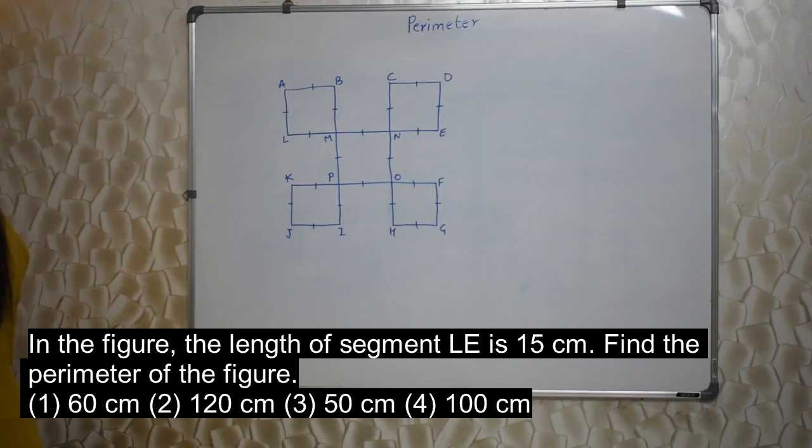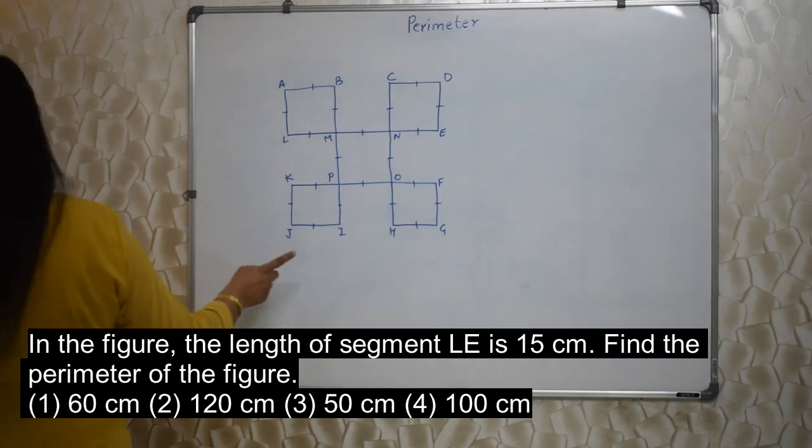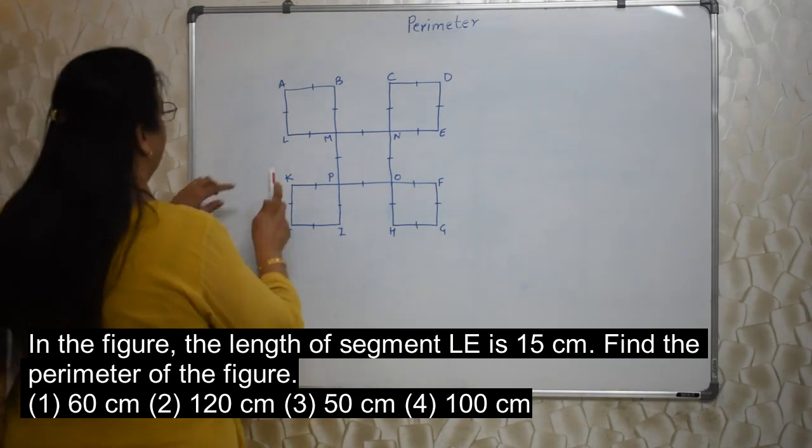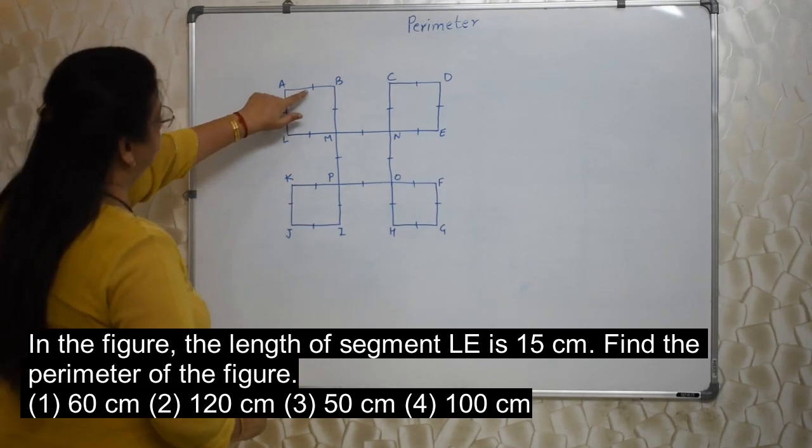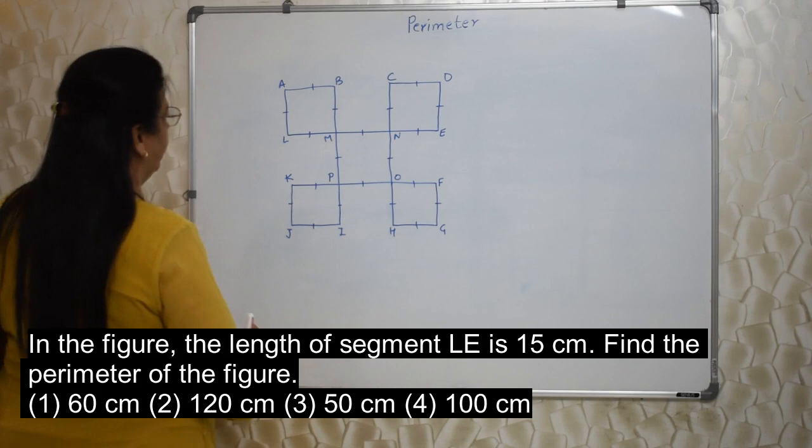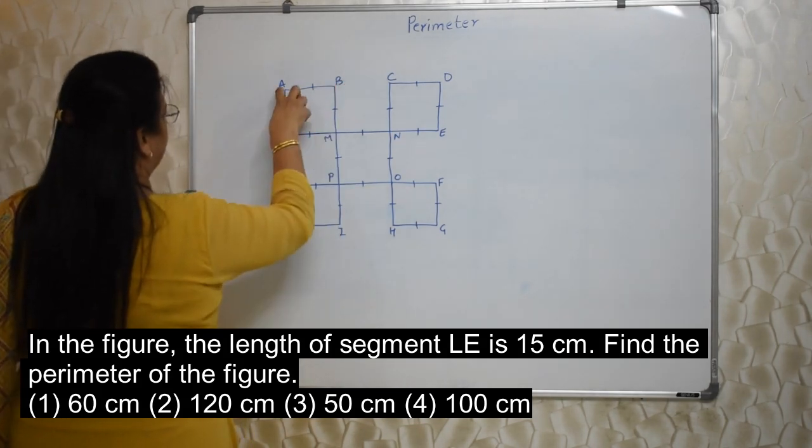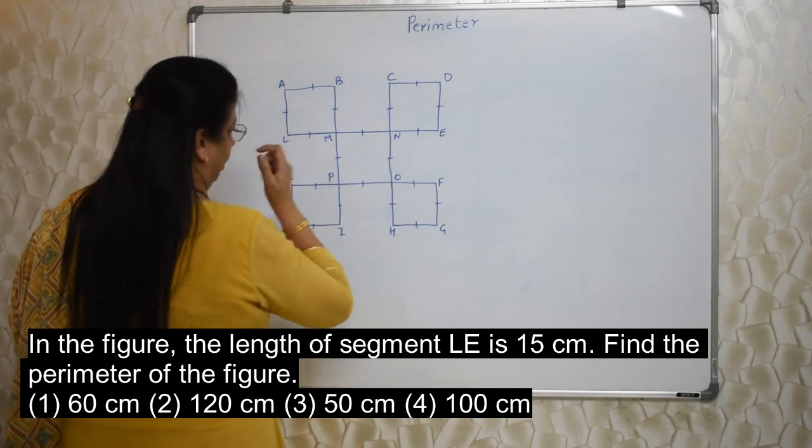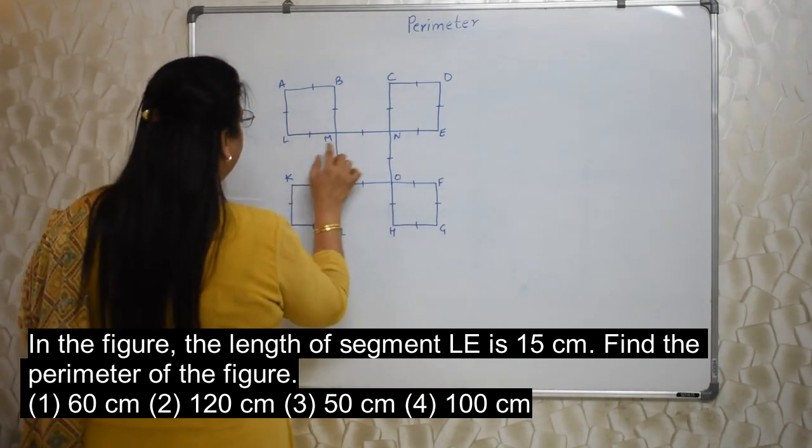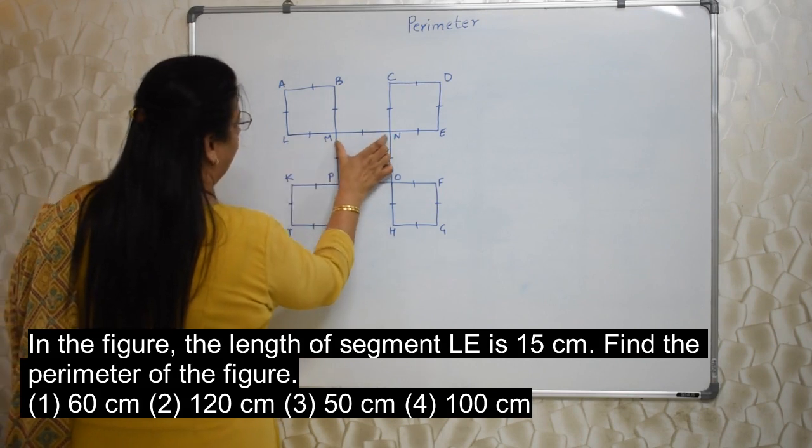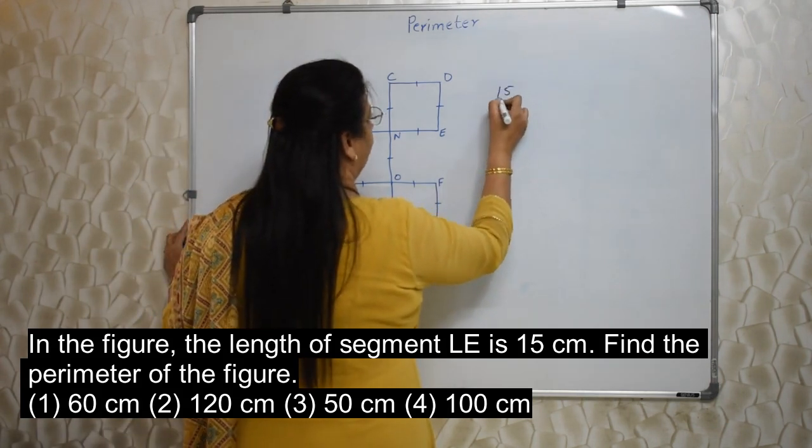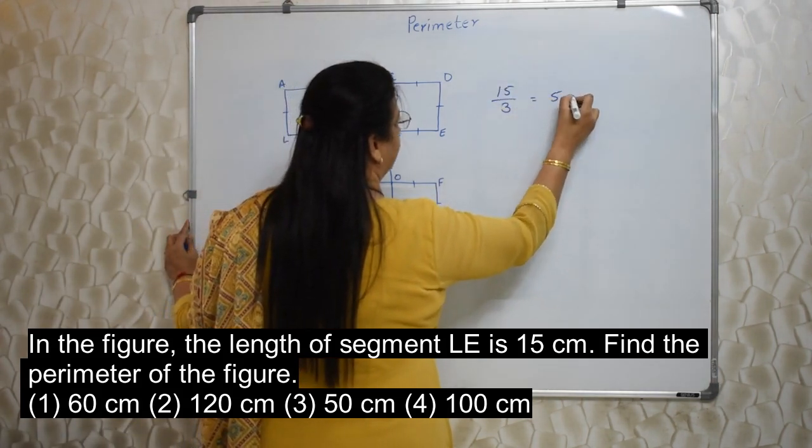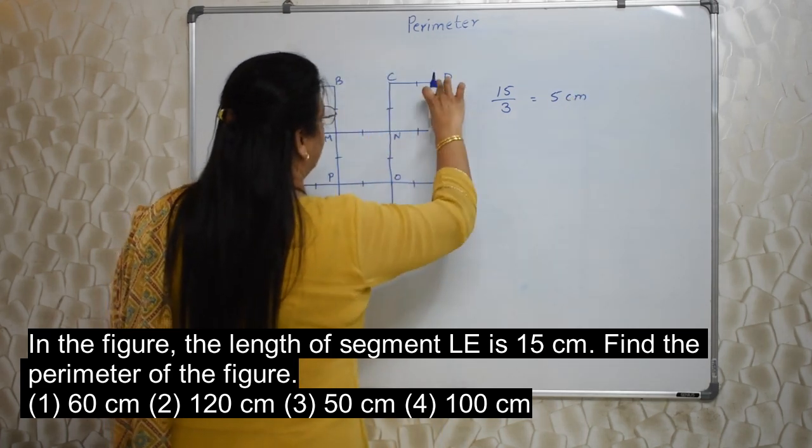In the figure, the length of the segment LE is 15 centimeter. Find the perimeter of the figure. See, I have drawn the figure here on the board. LE, this entire thing is 15 centimeter. See students, you all know these small lines indicated everywhere. What does it mean? All these segments are of equal length. So, this 15 is addition of LM plus ML plus NE. So, that 15 centimeter is made up of 3 small parts. So, each part will be of 5 centimeter. Right. So, each this portion is of 5 centimeter.